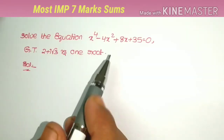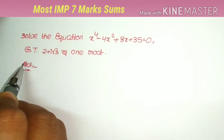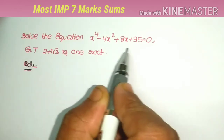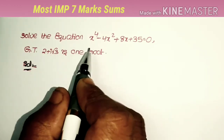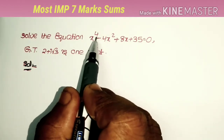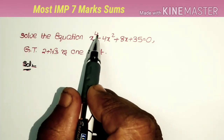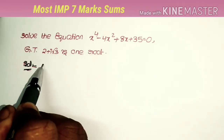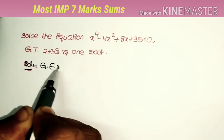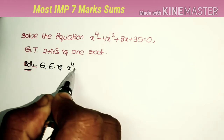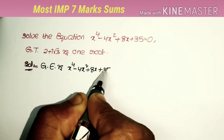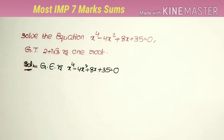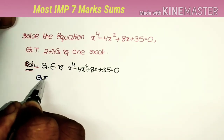The first problem is from the Theory of Equations. Solve the equation x⁴ - 4x² + 8x + 35 = 0, given that 2 + i√3 is one root. Since this is a degree-4 equation, it has 4 roots. The given equation is x⁴ - 4x² + 8x + 35 = 0, and the given root is 2 + i√3.